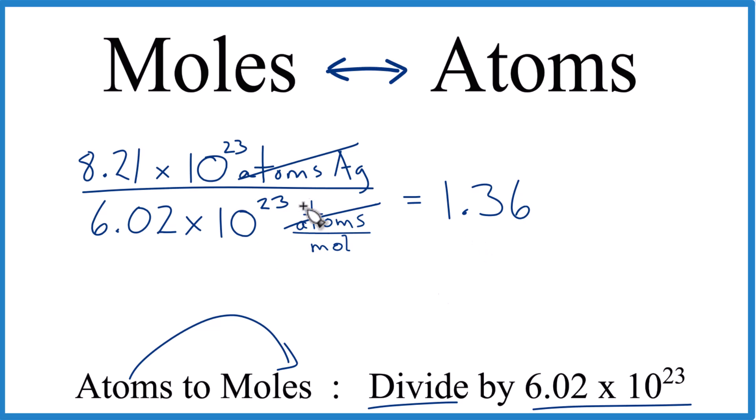1.36. Since this is the same, we're basically subtracting these exponents. They go away. We end up with 1.36 moles of, we said, silver there.